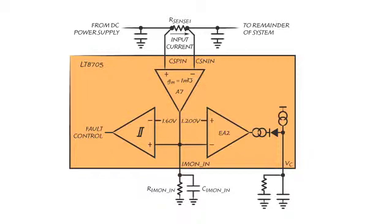When the voltage on Imon-in exceeds a reference voltage, the error amplifier will activate and pull down on the VC pin. There is an additional comparator that looks for when the Imon-in voltage exceeds 1.6 volts.